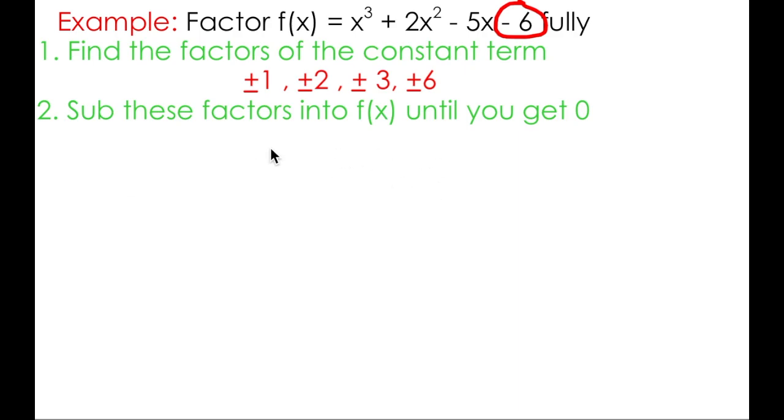Next, we want to strategically substitute these factors into the original function until we get 0. Now, the word strategic is key here. This requires a little bit of mathematical intuition, or as I like to call it, mathemagic. I know that I can rule out 6 and negative 6 just by recognizing that if I sub in 6 or negative 6 and raise it to the power of 3, I'm going to get either 216 or negative 216. And there's really no way that adding 2 times 6 squared is going to get me anywhere close to 0. So I can pretty much throw that option in the garbage.